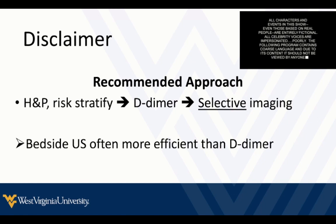This ultrasound should be part of a whole-patient approach. The recommended method is: history and physical, risk-stratify first, most algorithms suggest doing a D-dimer first and then imaging selectively in patients with a positive D-dimer. However, where I work the D-dimer may not come back in 10 minutes. I can often diagnose or exclude DVT faster than I can get a D-dimer result, so it is perfectly reasonable to just do the ultrasound of the extremity first rather than waiting.